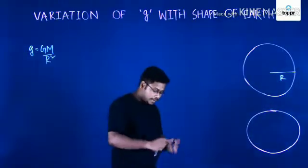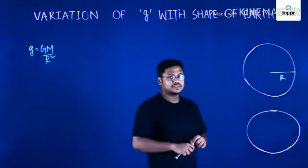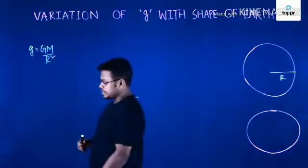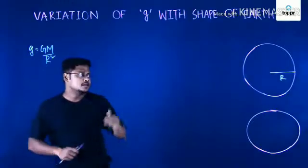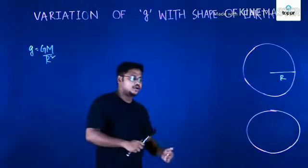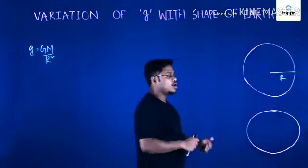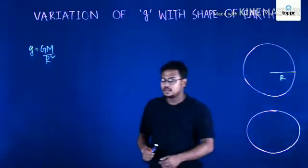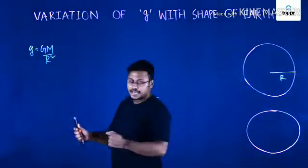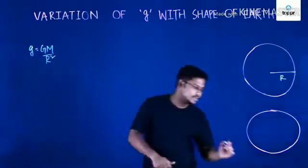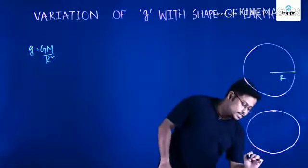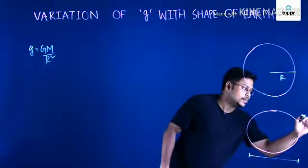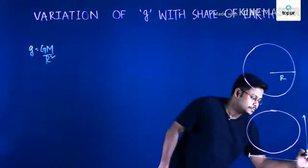But actually the shape of the earth is not spherical. It is an oblate spheroid, or you can say oblate ellipsoid, where there is a semi-major axis (the major axis) and a minor axis.